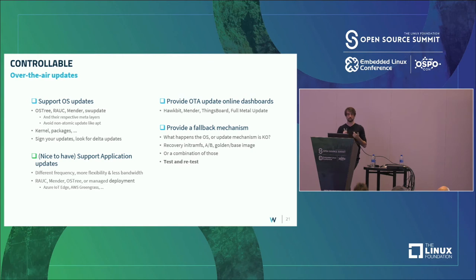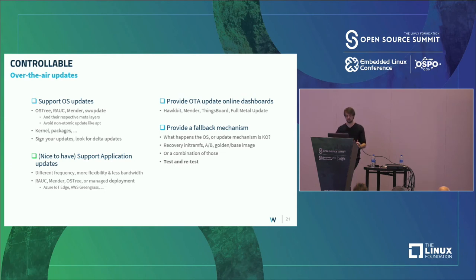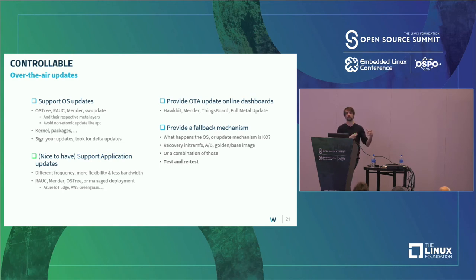Their goal is to update the kernel, packages — make sure to sign your update, obviously. Look also at delta updates because depending on what you deploy, the size of your file system can be pretty big. Some of these tools provide delta update capability where you just send the difference between the current version and the next one. Supporting application updates separately is important too, because the frequency of application updates is much higher than OS updates — mostly to add new features.